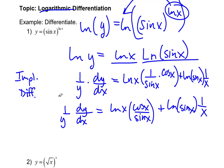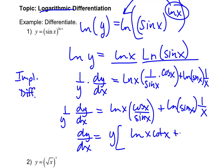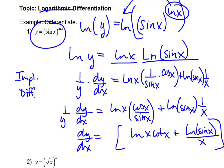Multiplying by y gives us dy/dx equals y times the quantity natural log of x times cotangent of x plus natural log of sine of x all over x. That y on the right might seem to ruin the explicit form, but we know what y is. Going back to the original problem, y equals sine of x to the natural log of x, so we replace y with that. dy/dx equals sine of x to the natural log of x, times natural log of x times cotangent of x plus natural log of sine of x over x. That is the explicit derivative.